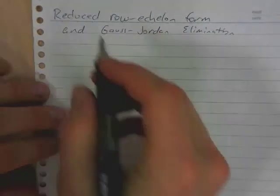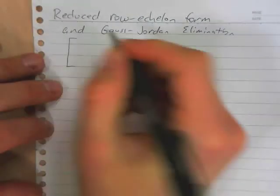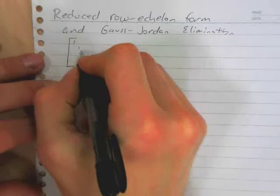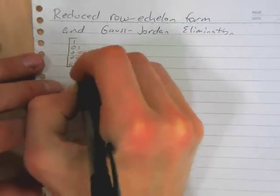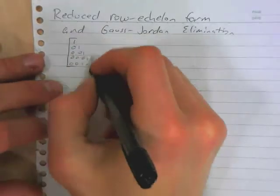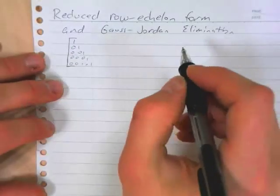Now, row echelon form meant that we had 1s along our diagonals, we had 0s all over the place below our diagonal, and then we had stuff up above our diagonal.